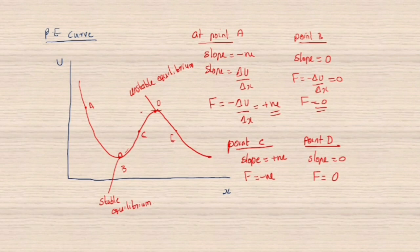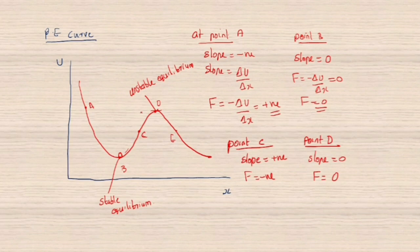One more type of equilibrium is neutral equilibrium. At neutral equilibrium, the potential energy is constant. When the particle displaces from its position, it does not experience any force acting on it, and it continues in equilibrium in the displaced position. That is called neutral equilibrium.